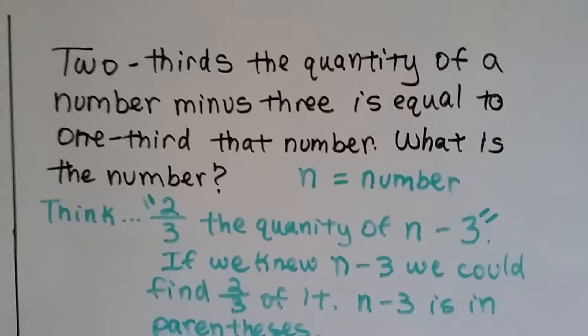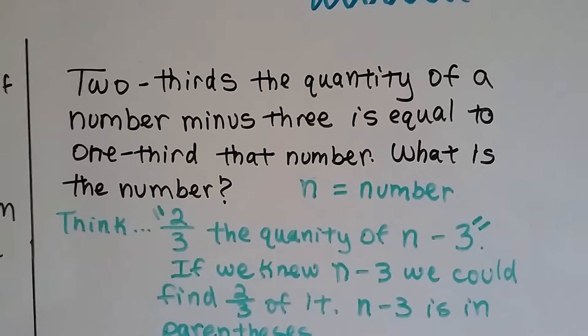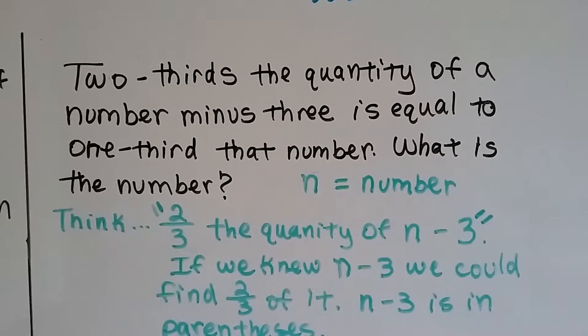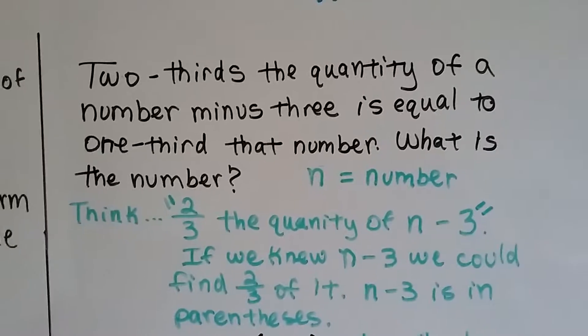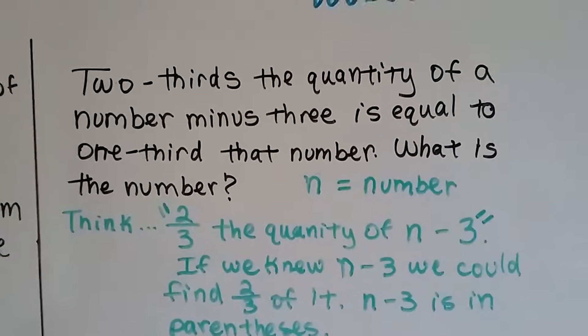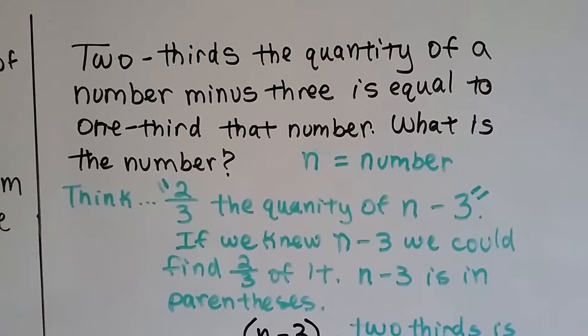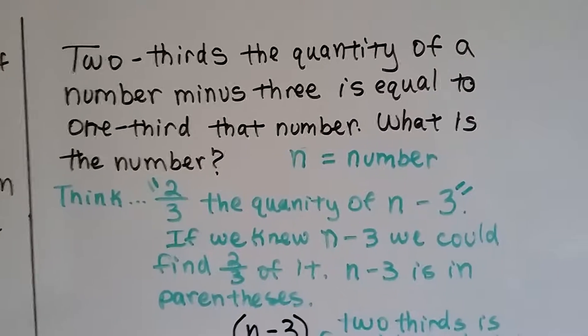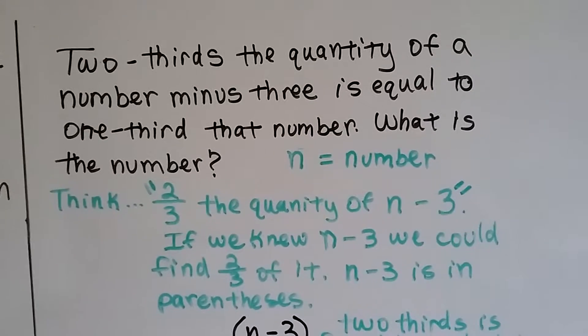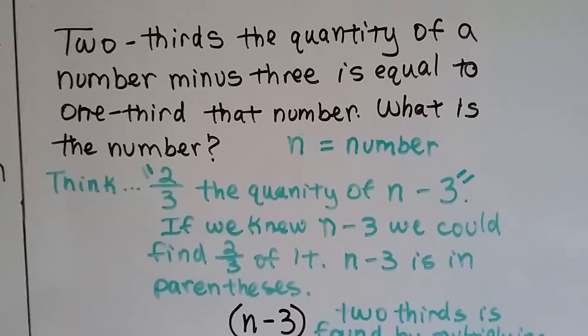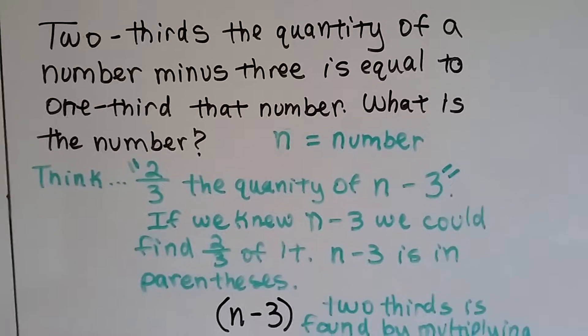2 thirds the quantity of a number minus 3 is equal to 1 third that number. What is that number? So, we're going to have n equal the number. We think 2 thirds the quantity of n minus 3. Well, if we knew what n minus 3 was, we could find 2 thirds of it, right? But we don't know what n minus 3 is. That tells me that n minus 3 is in parentheses and is by itself.